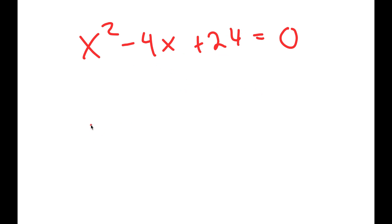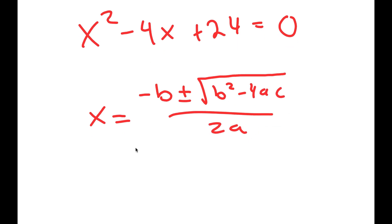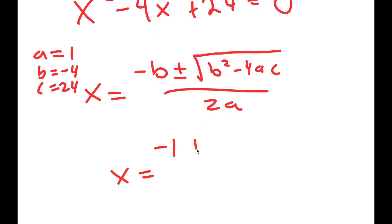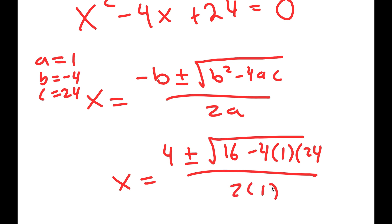Now we have a quadratic equation. To solve this, I'm going to use the quadratic formula: negative b plus or minus the square root of b squared minus 4ac, all over 2a. In this case, a is 1, b is negative 4, and c is 24. So I get x is equal to positive 4 plus or minus the square root of negative 4 squared, which is 16, minus 4 times 1 times 24, all over 2 times 1.